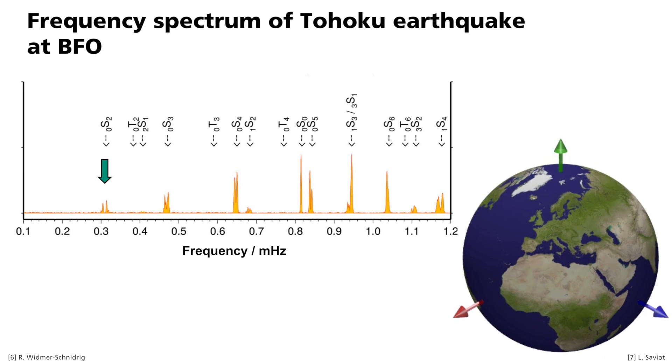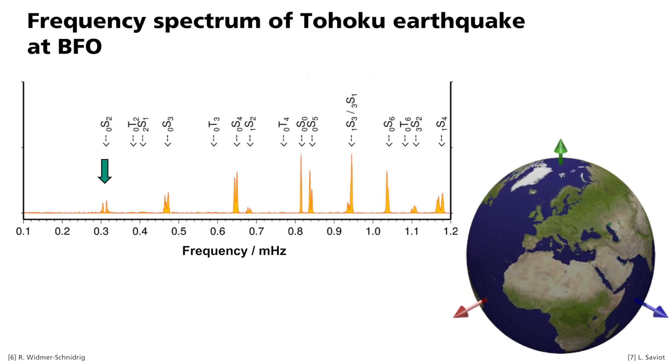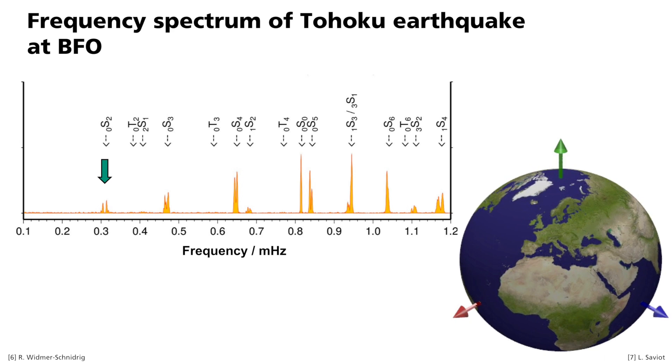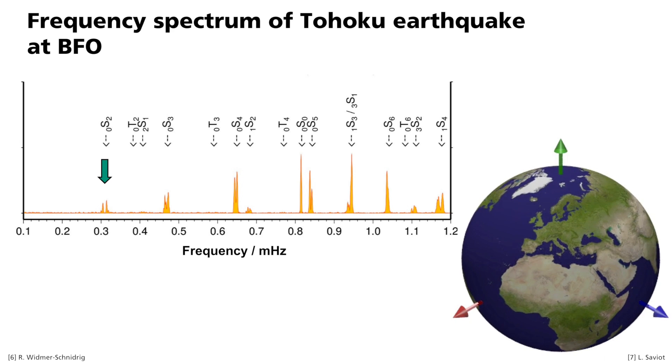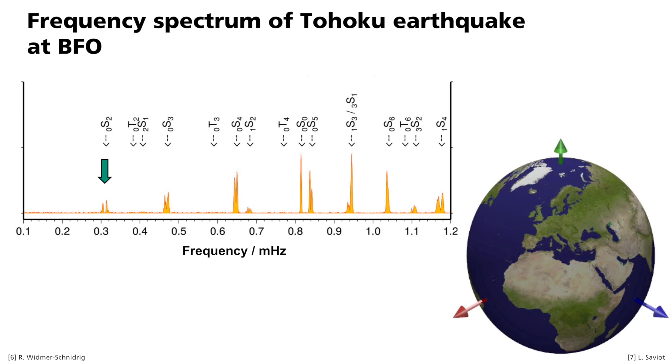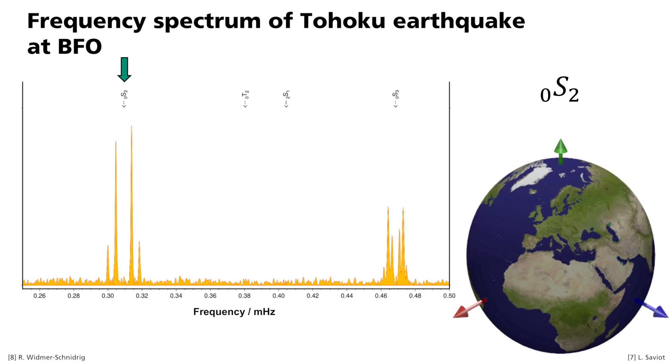In the animation, you can see this mode in an exaggerated scale. We call this mode the rugby mode, because the maximum deformation has an egg-like shape. If we examine it more closely, we realize that 0S2 is split into four parts.